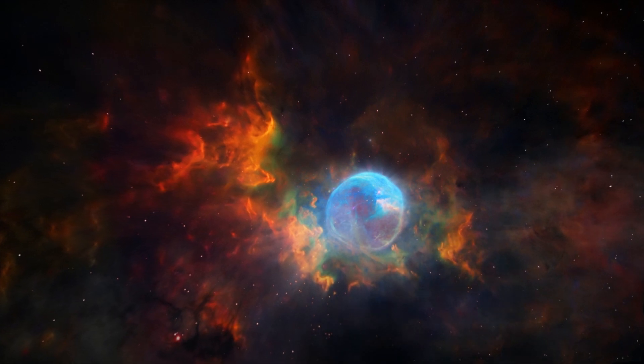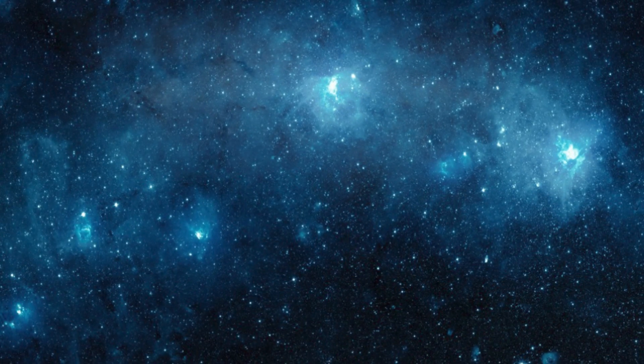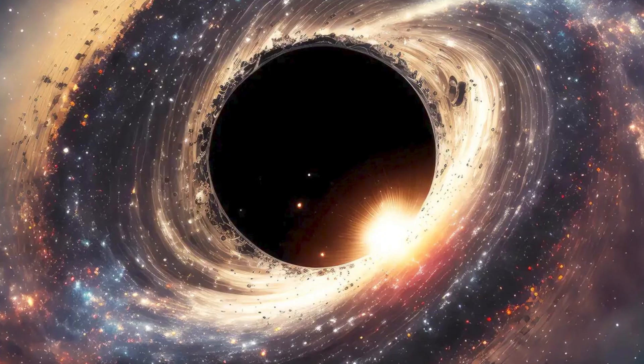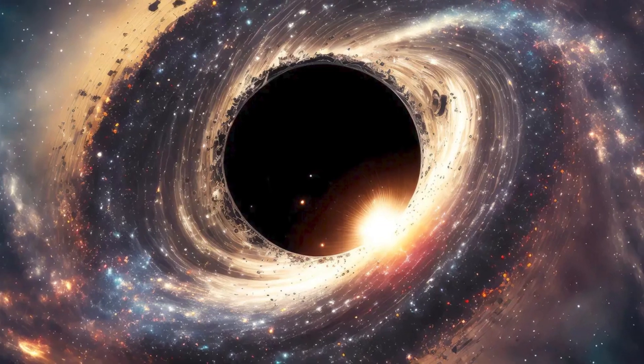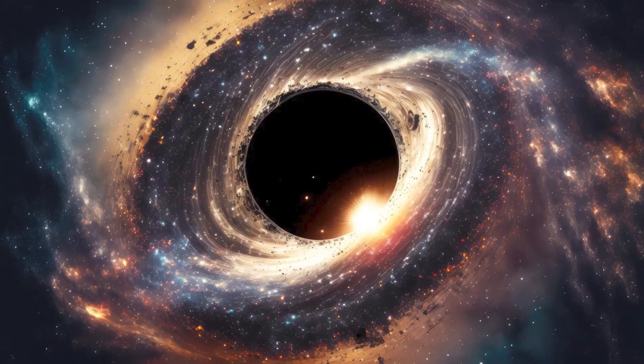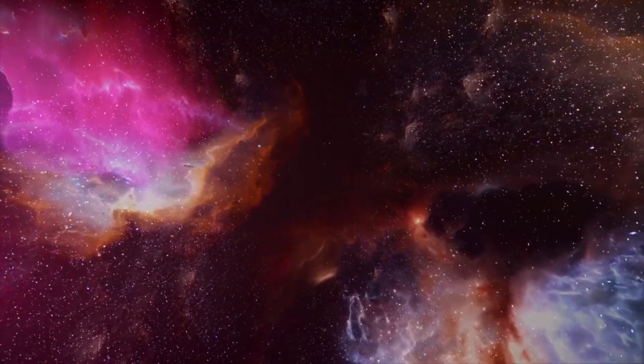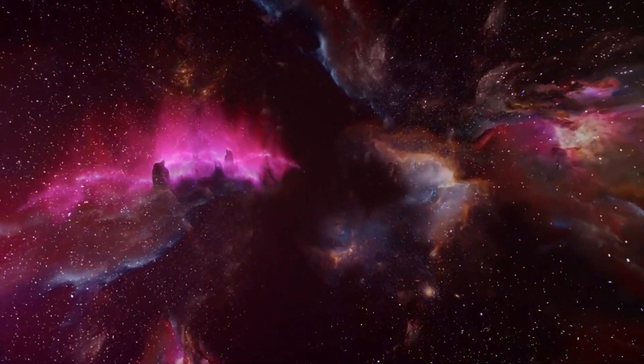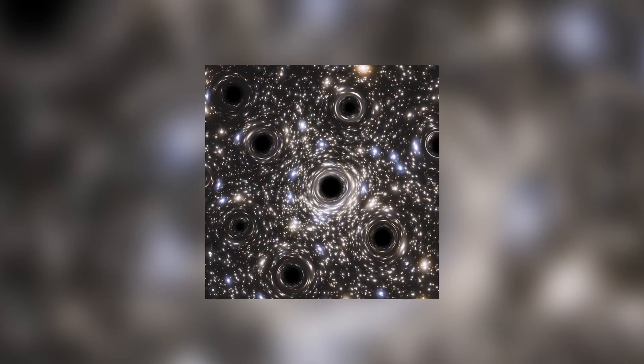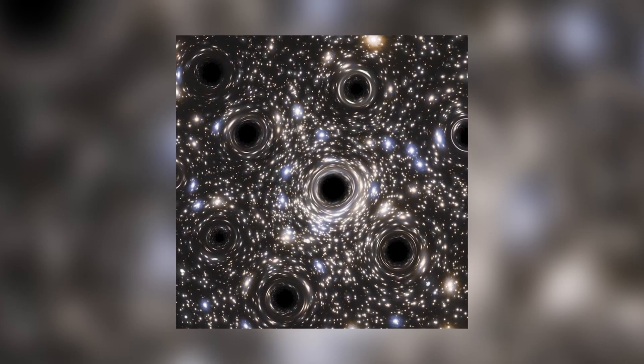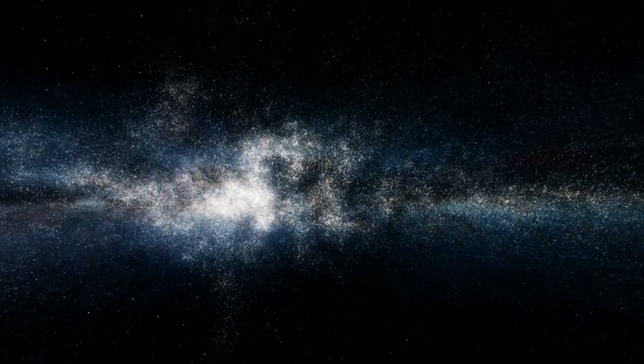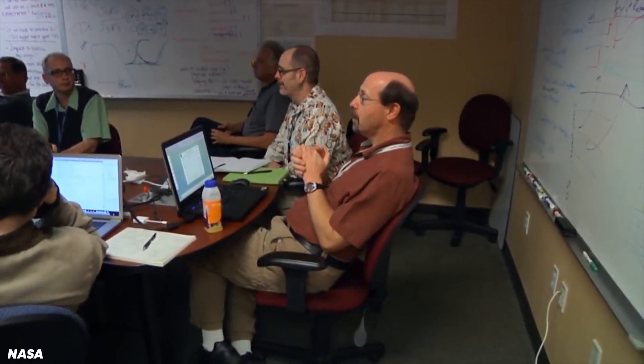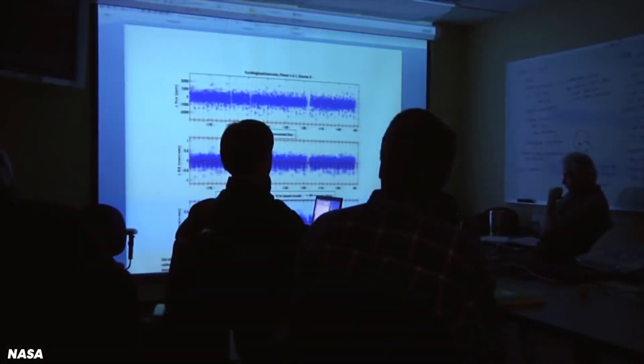Several theories attempt to answer this question. One states that the first stars, known as Population III stars, were much larger than current stars and ended their short lives as black holes, which then served as seeds for supermassive black holes. Another theory proposes that large gas clouds in the early universe directly collapsed into black holes. Yet another suggests the existence of primordial black holes, born from the quantum fluctuations of the early universe, which could have grown into the supermassive black holes we observe today. Each of these theories presents its challenges, and scientists continue to explore this mystery.